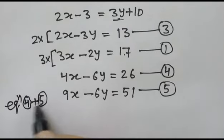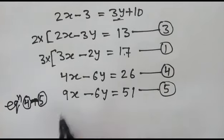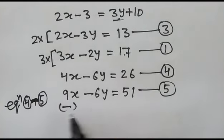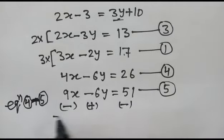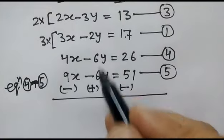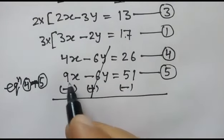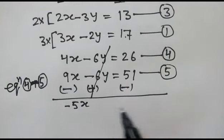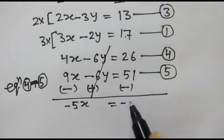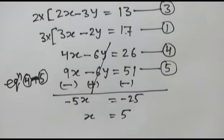Taking equation four minus equation five — applying the minus sign — the 6y terms cancel out. We get minus 9x plus 4x, which is minus 5x, equals minus 25. Therefore x equals 5.